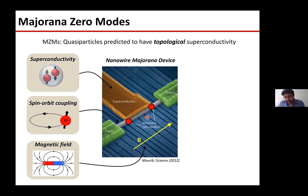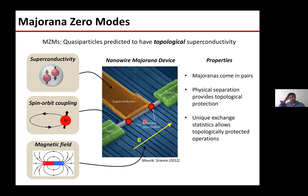In the context of quantum computing and topological quantum computing, Majoranas are expected to have fundamental properties that make them appealing. They come in pairs, and the separation between these pairs determines their topological protection - how long-lived a qubit made from them would be. This protection grows exponentially with the separation between the Majoranas. For gate operations, you exploit the fact that Majorana zero modes have non-Abelian exchange statistics, which allows topologically protected operations.